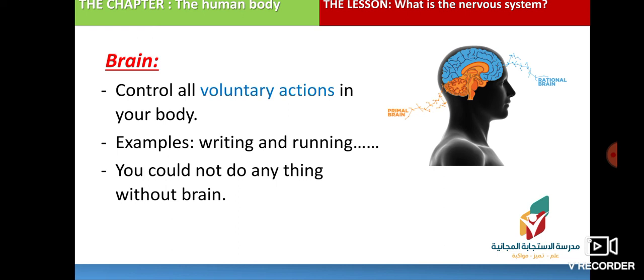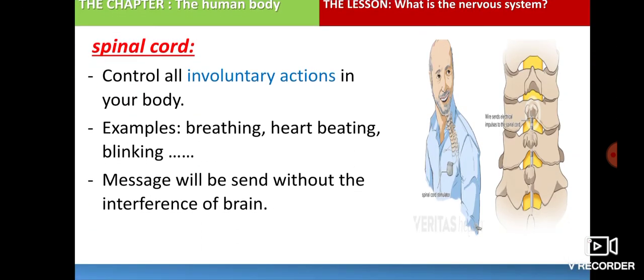The spinal cord controls all involuntary actions in your body. Involuntary actions are done by your body without thinking and without the interference of the brain. Examples include breathing, heartbeating, and blinking. These actions are controlled by the spinal cord.